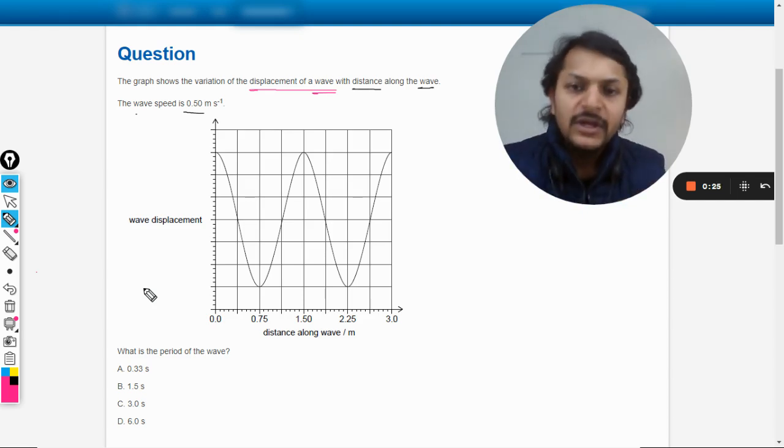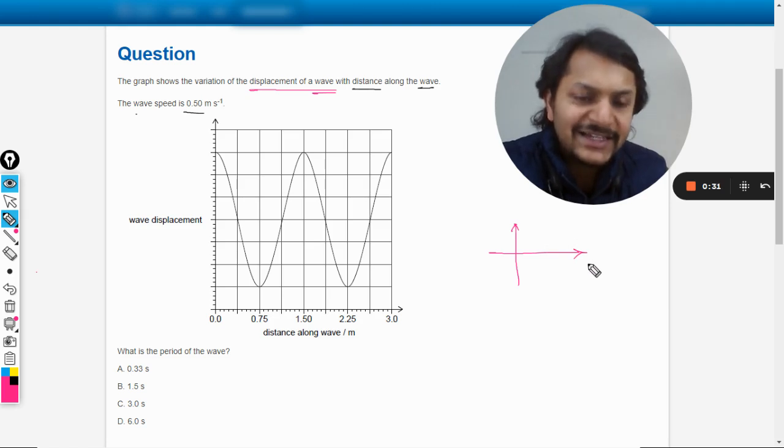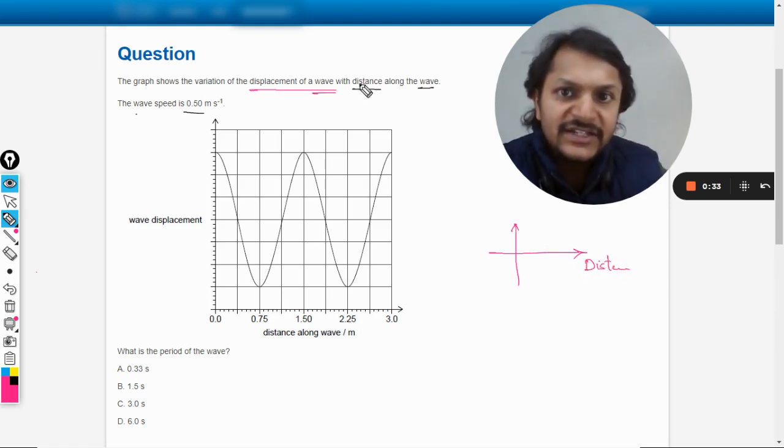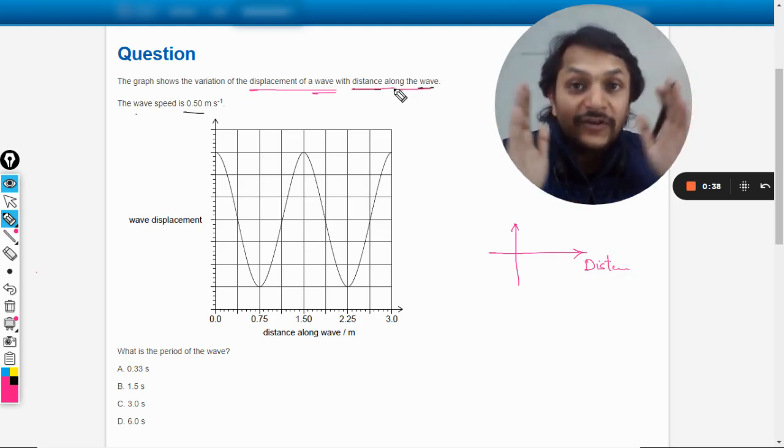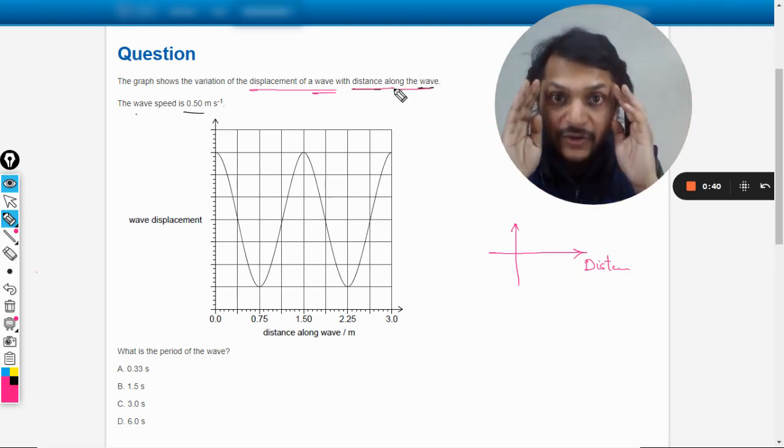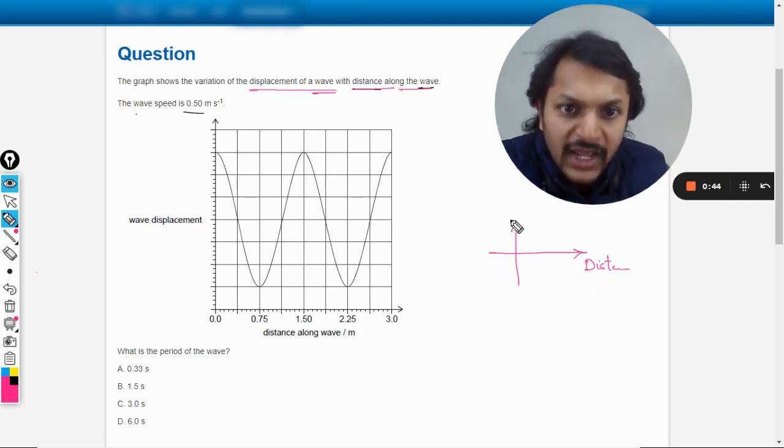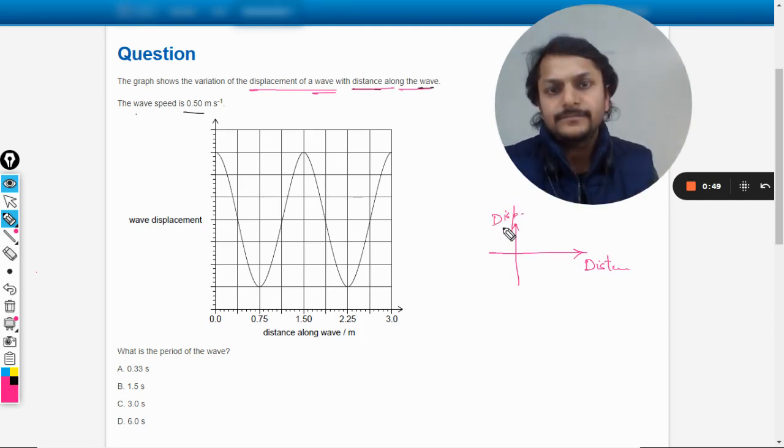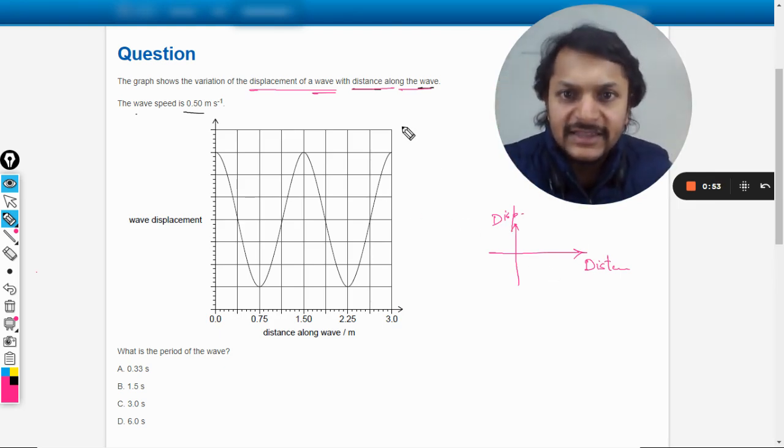What are they? The first type of graph is when on the x-axis you have distance - it is given as distance along the wave. Be very particular, be very concentrated. This is distance. And on the y-axis you have displacement. So whenever you have this kind of a graph, you're talking about the wave, and this is literally shown here.